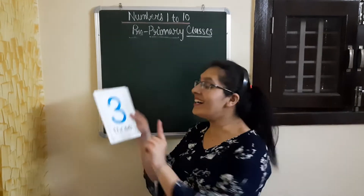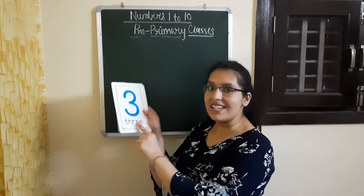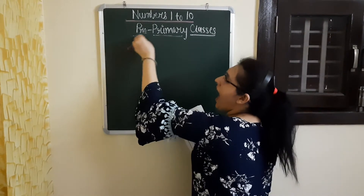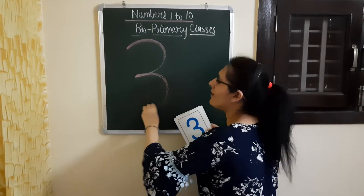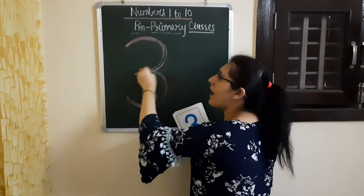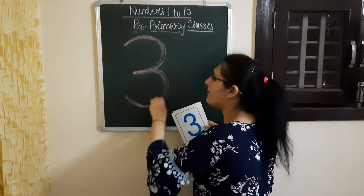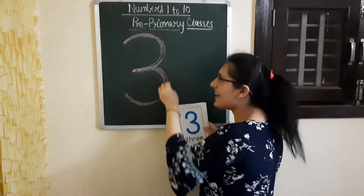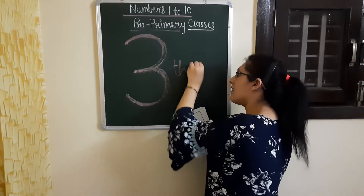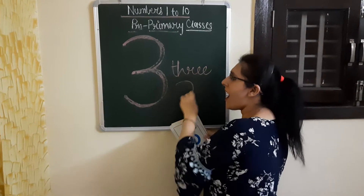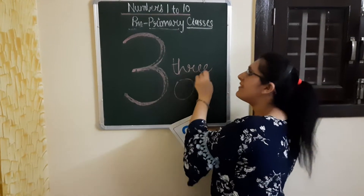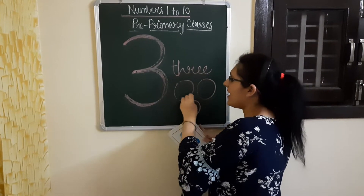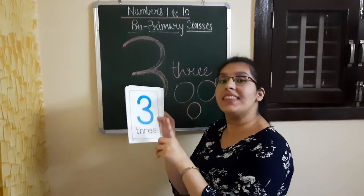Now comes number 3. So let us make it: half round and half round. Half round and half round. This makes number 3. 1, 2 and 3. This is number 3.